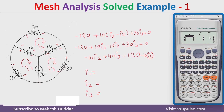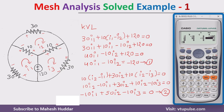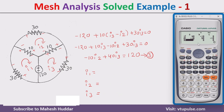For the first row we put the values from equation 1: 40, −10, 0, −120. For the second row we enter the values from equation 2: −10, 50, −10, 0. For the third row we enter the values from equation 3: 0, −10, 40, 120.